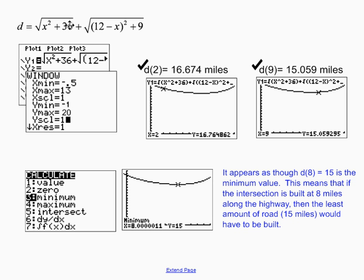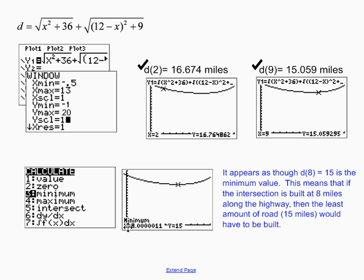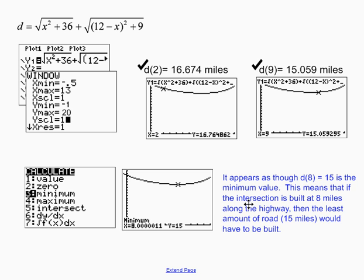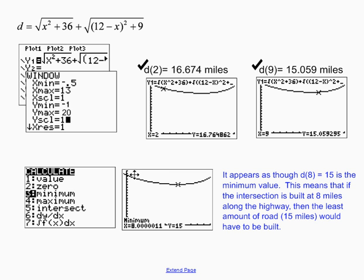Since I was on the technology, I went to the minimum feature and found that when x is 8, y equals 15. So it appears the answer to the question is I should build the road 8 miles away from town A, and I would require only 15 miles of road to make the connection.